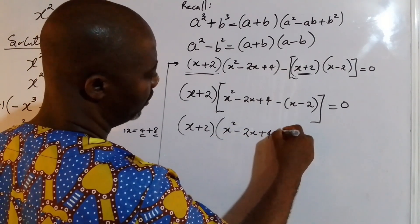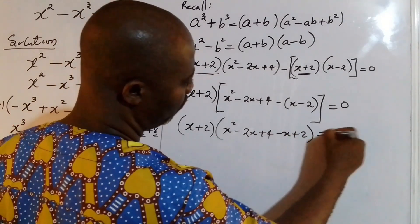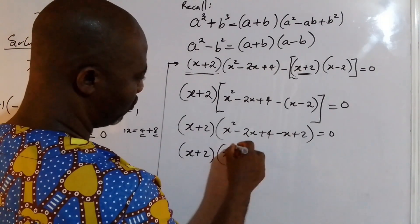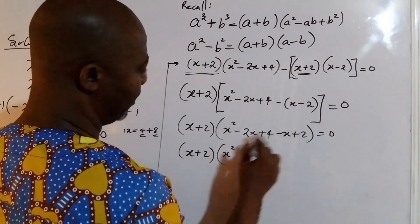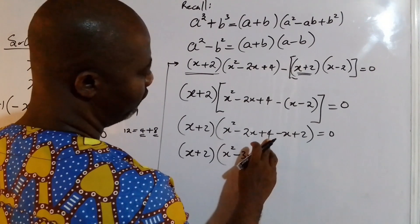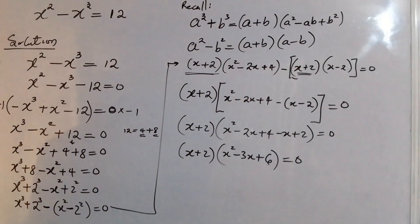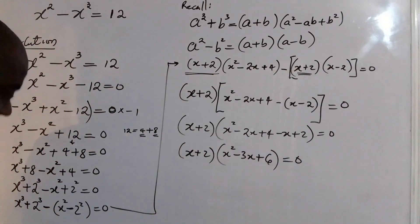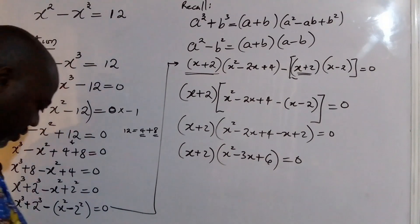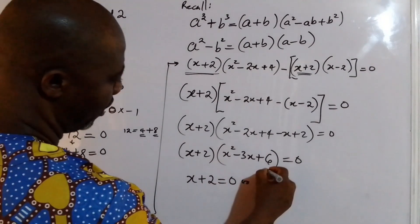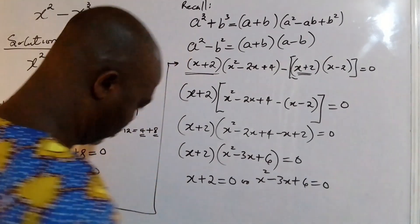We can see that (x + 2) is common to both terms, so we factor it out. We get (x + 2) times [(x² minus 2x plus 4) minus (x minus 2)] equals 0. Simplifying inside the bracket: x² minus 2x minus x plus 4 plus 2, which gives us x² minus 3x plus 6. So we have (x + 2)(x² minus 3x plus 6) equals 0.